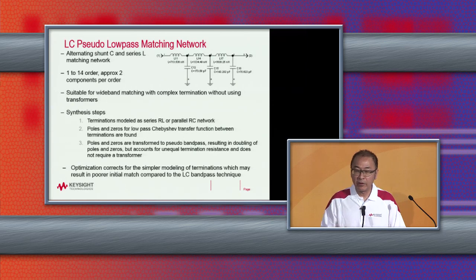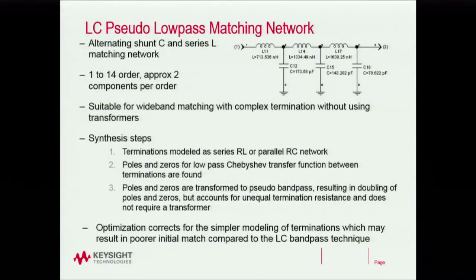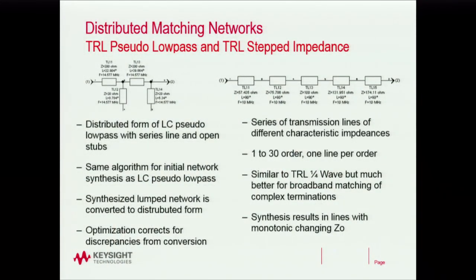For a Chebyshev response, the poles of the transfer function are constrained on an ellipse in the S-plane, and the zeros are determined through optimization. This allows us to match over a very broad band of frequency using measured input and output impedance — such as S-parameter measurements or load-pull requirements for specific impedance over frequency. The distributed version takes the already-synthesized LC network from the Chebyshev response and transforms the LC components into distributed equivalents: capacitors become open stubs and inductors become series stubs.